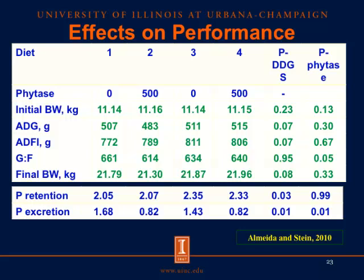We also measured phosphorus excretion. Adding phytase to the corn-soybean meal diet reduced excretion from 1.68 to 0.82 g/day. The corn-soybean meal-DDGS diet without phytase had excretion of 1.43 g/day, which was also reduced to 0.82 g/day with phytase added. Importantly, diet 4 — containing corn-soybean meal, DDGS, and 500 units of phytase — required no dicalcium phosphate, yet pig performance and phosphorus retention were the same or better than other diets. This means pigs can be fed without any dicalcium phosphate in the diet.